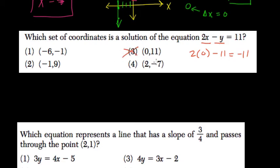Choice 4, 2 times 2, our x value, minus negative 7, what's that? Well, it equals 4 plus 7, which is 11. That's our answer.